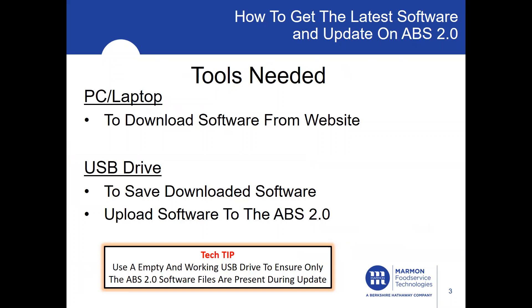Today's topic is how to get the latest software and update on the ABS 2.0. What's needed as far as tools: you'll need a PC laptop to download the software from the website. You'll also need a USB drive to save the downloaded software and to upload the software to the ABS 2.0. It's highly recommended to use an empty and working USB drive to ensure only the ABS 2.0 software files are present during the update.